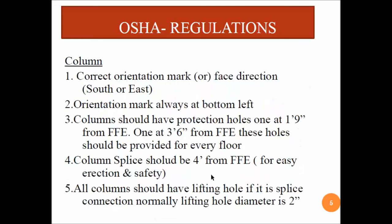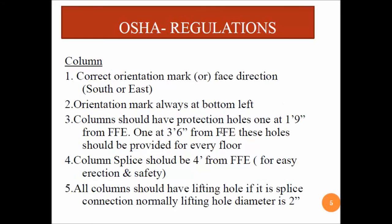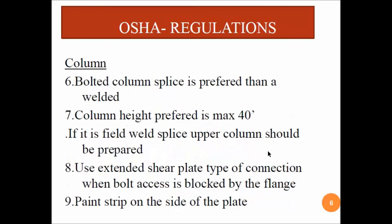To revise: for base plates, a minimum of four holes or four anchor rods are required, and if the base plate exceeds 24 inches, one grout hole must be provided. For columns, orientation mark and face direction are very important. Protection holes must be provided at 1 foot 9 inches and 3 feet 6 inches from Finished Floor Elevation. The column splice should be 4 feet from Finished Floor Elevation for easy and safe erection. Columns must have lifting holes of about 2 inches in diameter.